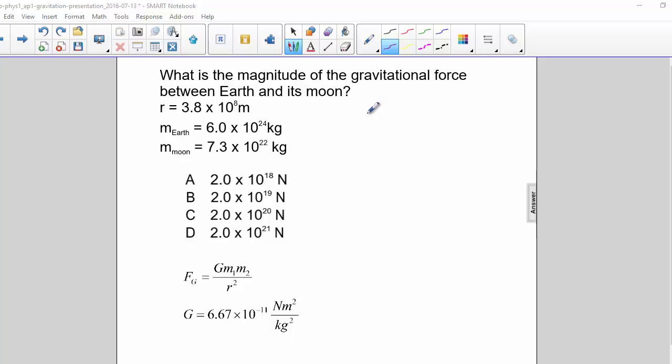What is the magnitude of the gravitational force between the Earth and its moon? Fg is equal to g m1 m2 over r squared. g is 6.67 times 10 to the negative 11th.